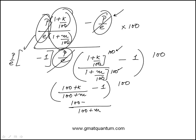And the top would be 100 plus K minus 100 minus M, because I have to distribute that negative sign times 100. The 100s drop out, I get K minus M over 100 plus M times 100.